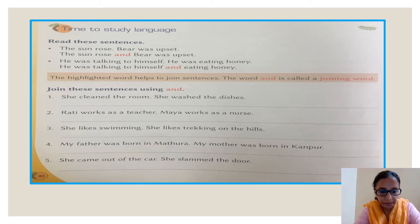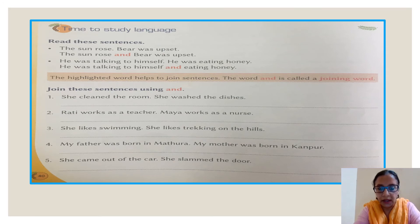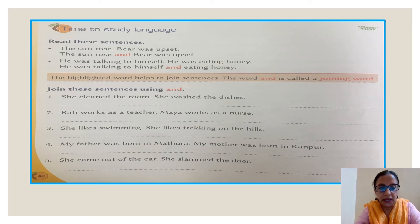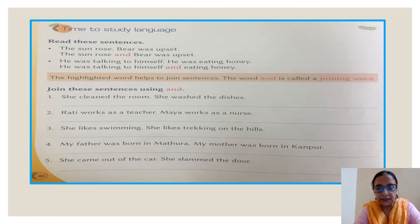Now the third one: she likes swimming. She likes trekking on the hills. She likes swimming and trekking on the hills. We do not write 'she likes' a second time. Instead we use the joining word and, because we don't repeat the same thing. We shorten the sentence while completing it with and.